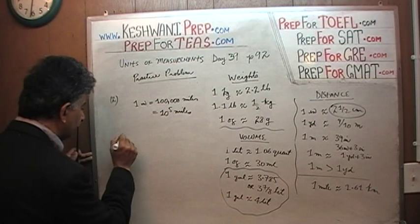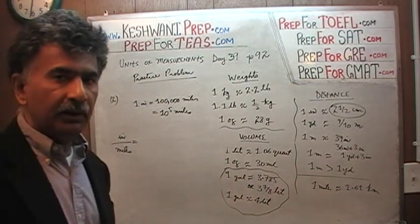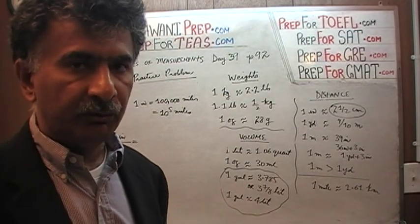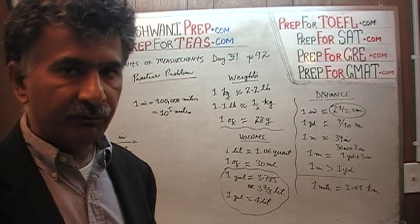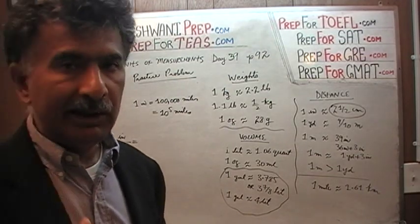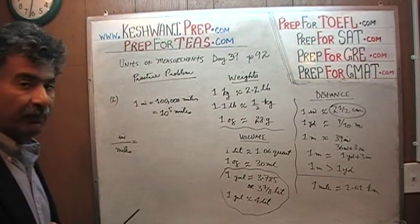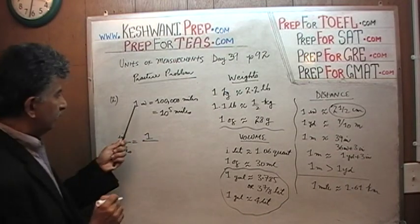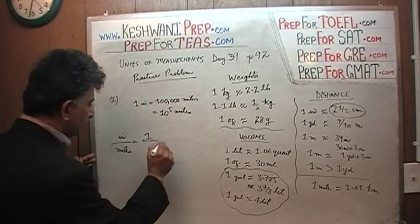So we have inches and miles. We're dealing with two unlike things. We learned the difference between ratio and proportion. Ratios deal with similar things that can be added or subtracted and proportions deal with unlike things, dissimilar things that cannot be added or subtracted. Here we're dealing with proportions, we're dealing with inches and miles. We're told that one inch represents 10 to the 5 miles.